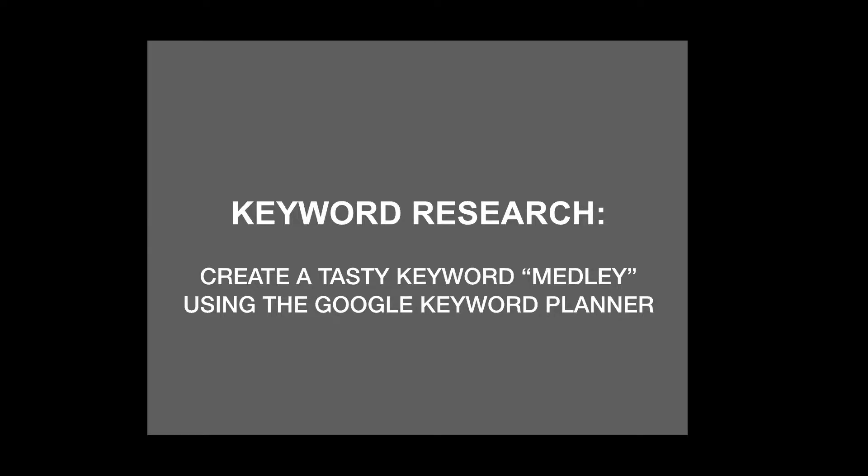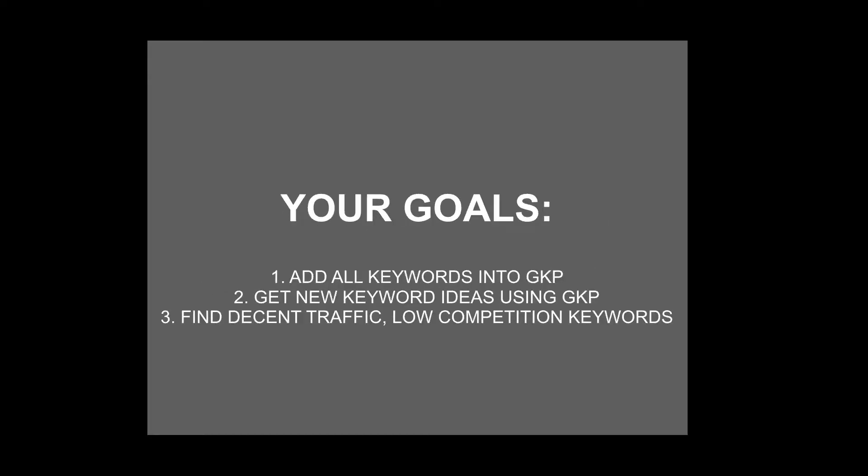Hello and welcome to our section on keyword research: creating a tasty keyword medley. We're going to be doing this using the Google Keyword Planner. A keyword medley is essentially taking all the external data gathered in the previous video — all those keywords from the YouTube auto-suggestion feature by typing in A, B, and C — and inserting it into the Google Keyword Planner to figure out how many monthly searches each keyword gets.